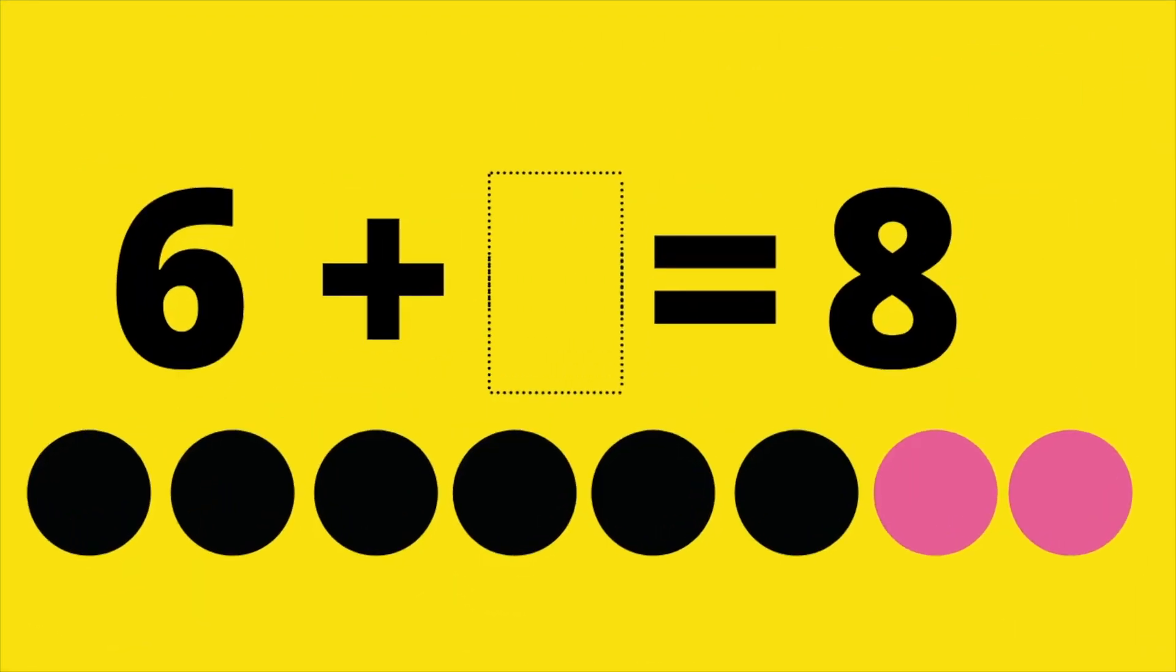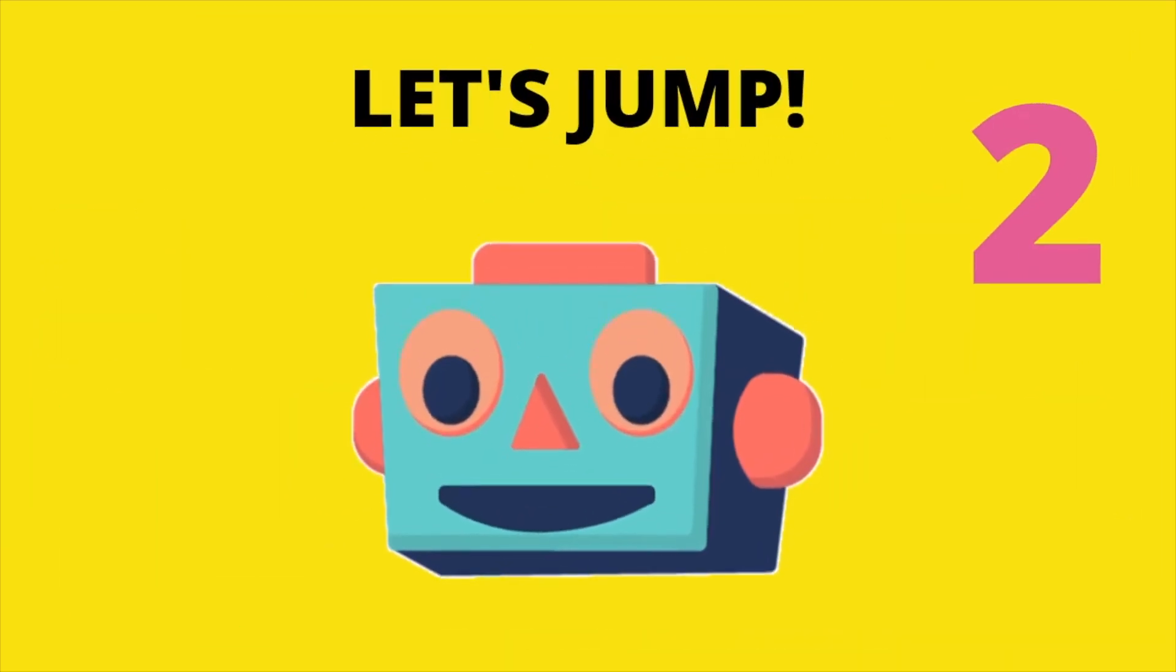All right, now that you've gotten the hang of it, let's move on to our next problem. Six plus blank equals eight. Remember, the pink dots are there to help you solve the problem. Two. The answer is two. Six plus two equals eight. All right, let's get ready to jump. Two jumping jacks. Let's go. One, two. Great job, everyone.